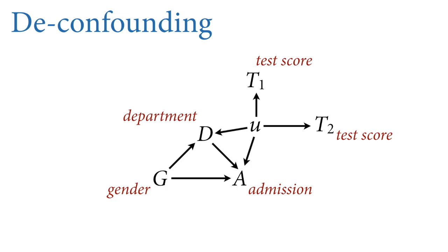Another option is to try to de-confound yourself by getting information about the confound. In the DAG, the variable U now has some descendants — T_1 and T_2. These are test scores or letters of recommendation — information about the applicant which gives us information about their qualifications and ability. It turns out you can use this information, if it's high quality, to infer U with error but well enough to de-confound your inference about the effects of gender on admission. But what you can't do is just add the test scores to the GLM as if it were some big multivariate regression model. Instead, you need to obey the structure shown in the DAG.